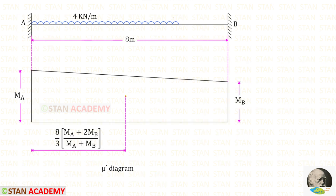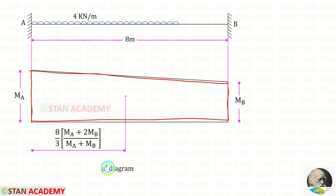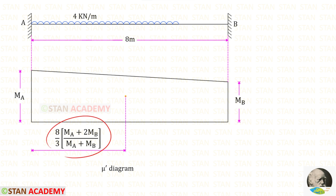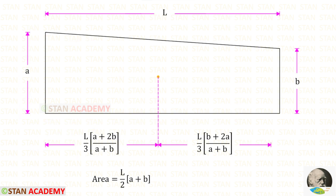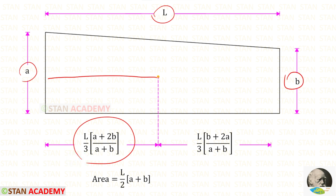Now let us draw the mu dash diagram. The UDL starts at point A and ends before point B, so MA will be greater than MB. We draw a higher line for MA and a smaller line for MB and connect them, giving the mu dash diagram. For a trapezoid with heights A and B and length L, the formula for the centroid towards the left is L/3 × (A + 2B)/(A + B), and the formula for area is L/2 × (A + B).